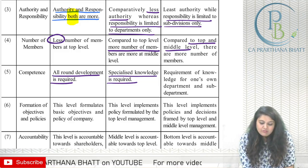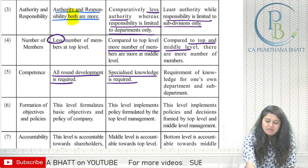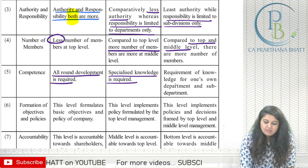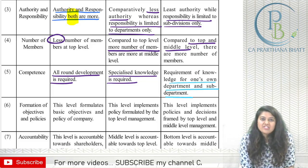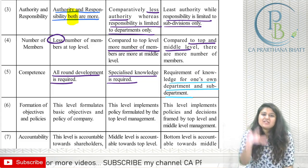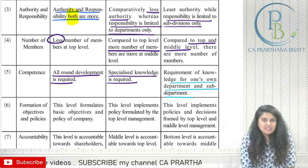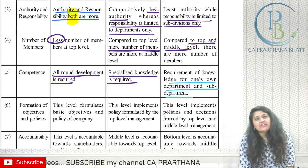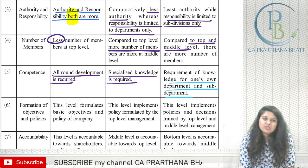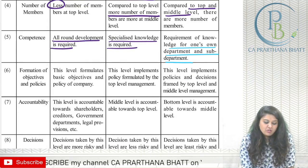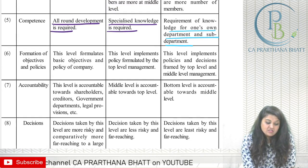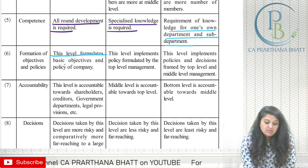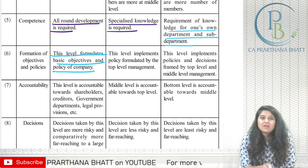At middle level, specialized knowledge is required. If there is an accounts department, a Chartered Accountant will be there; if it is the finance department, a specialized finance person will be there. They have targeted, specified knowledge of their particular department. At bottom level, knowledge requirement is for one's own department only, and some departments need specialized knowledge to perform their duties.